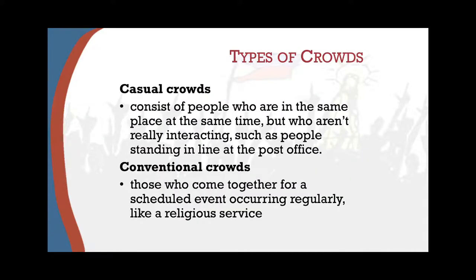Now let's talk about collectives of people rather than collective behavior. There are what we call casual crowds — people who are in the same place at the same time but who aren't really interacting functionally, such as people standing in line at the post office, waiting for the jeepney, MRT, or LRT, or people walking inside the mall not really interacting with each other.